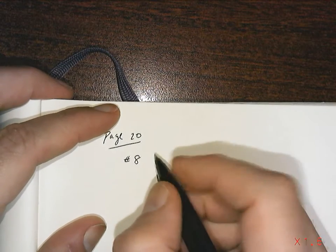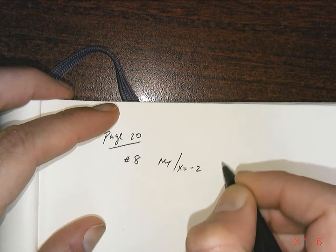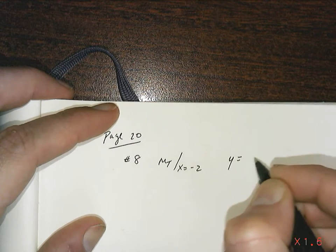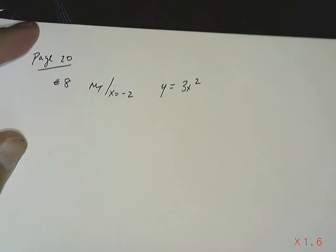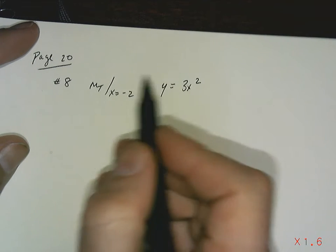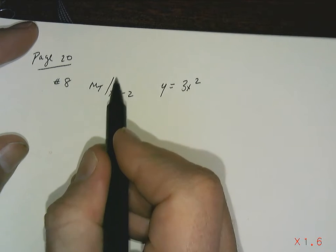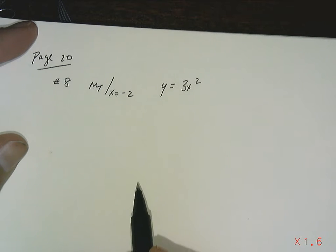It's asking you to determine the slope of the tangent when x equals negative 2 to the function y equals 3x squared. Now notice I wrote this down differently. There's a lot more words in the textbook. You're welcome to write out all the words, but this is what the question's asking for: the slope of the tangent when x equals negative 2 of y equals 3x squared.